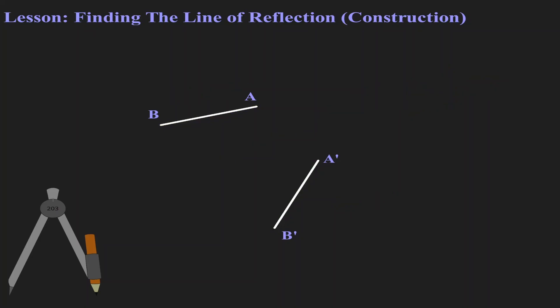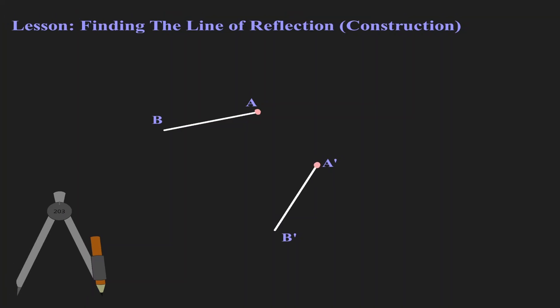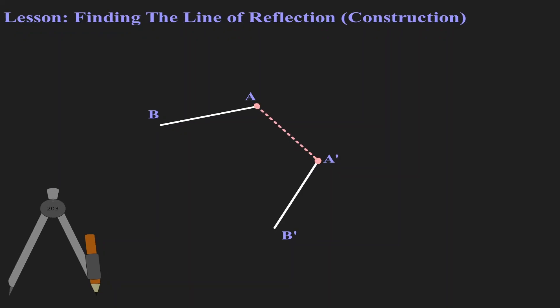Let's concentrate on point A. When A was reflected, it landed on A'. So the first thing that we want to do, now that we have identified the image and the pre-image, we want to connect those points. Let's construct the perpendicular bisector on the line A, A'.